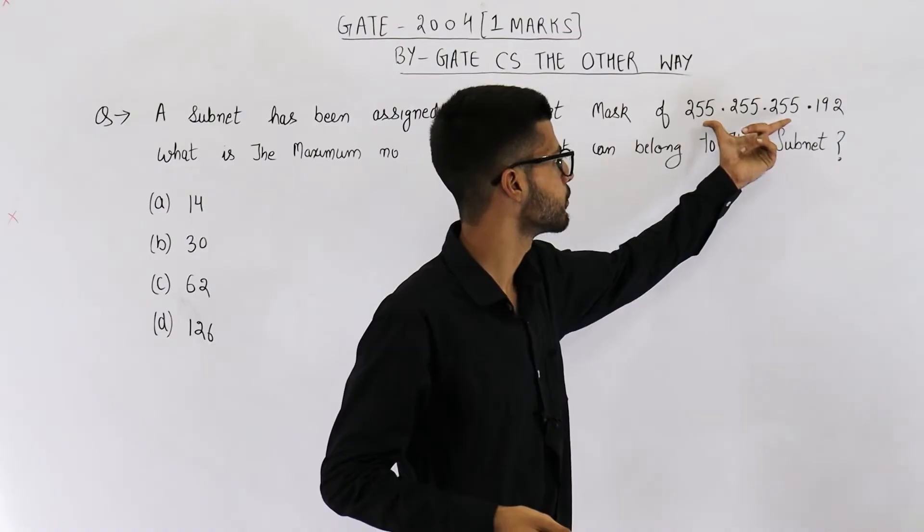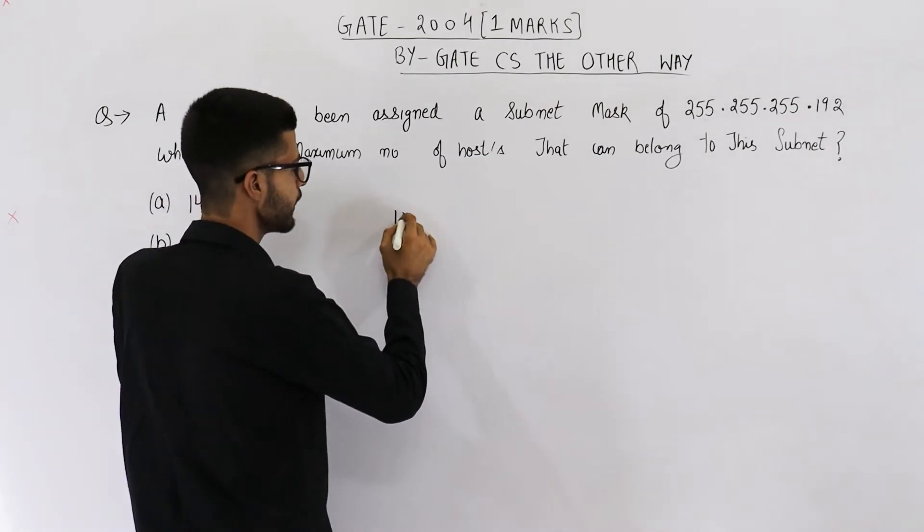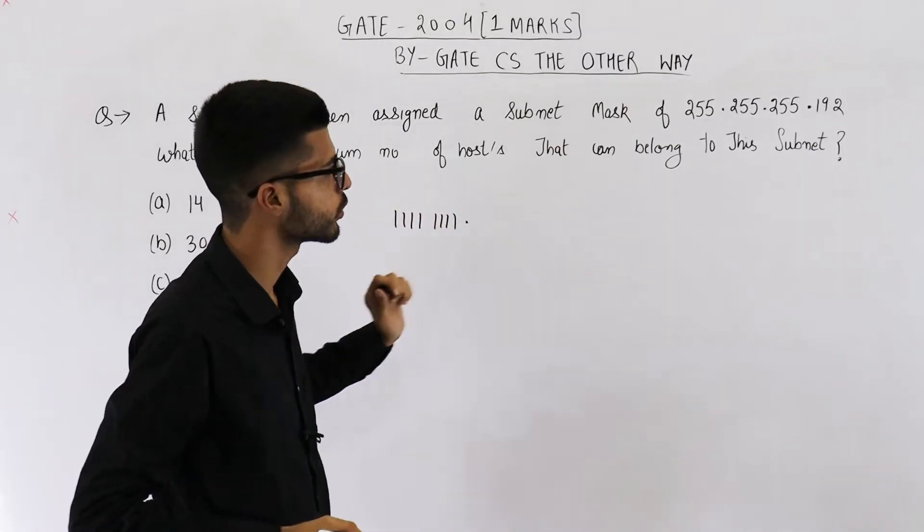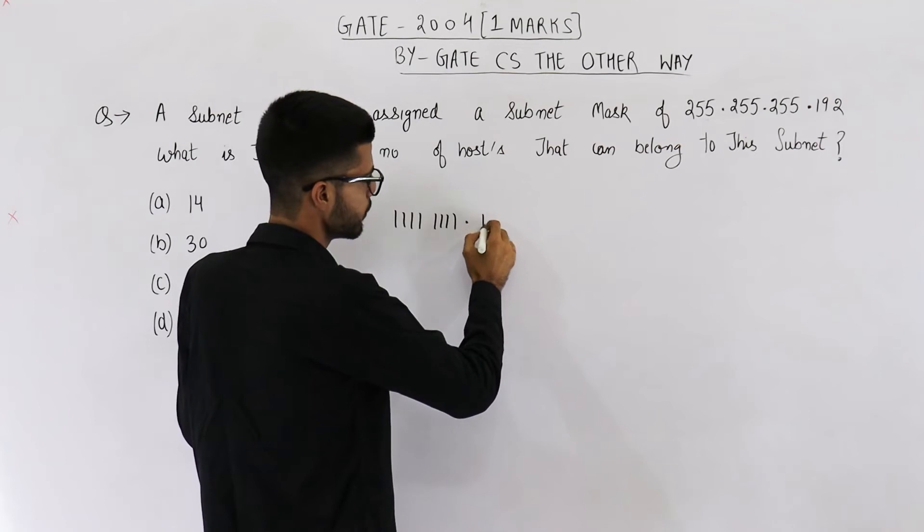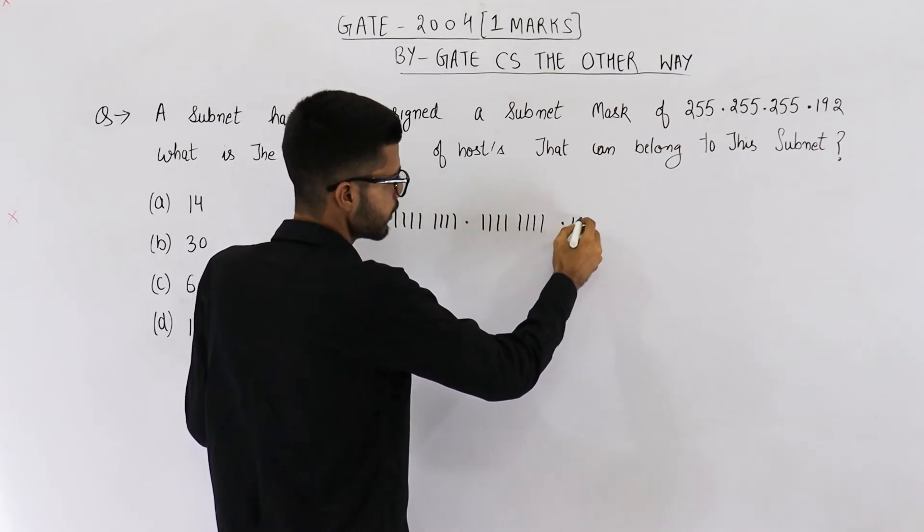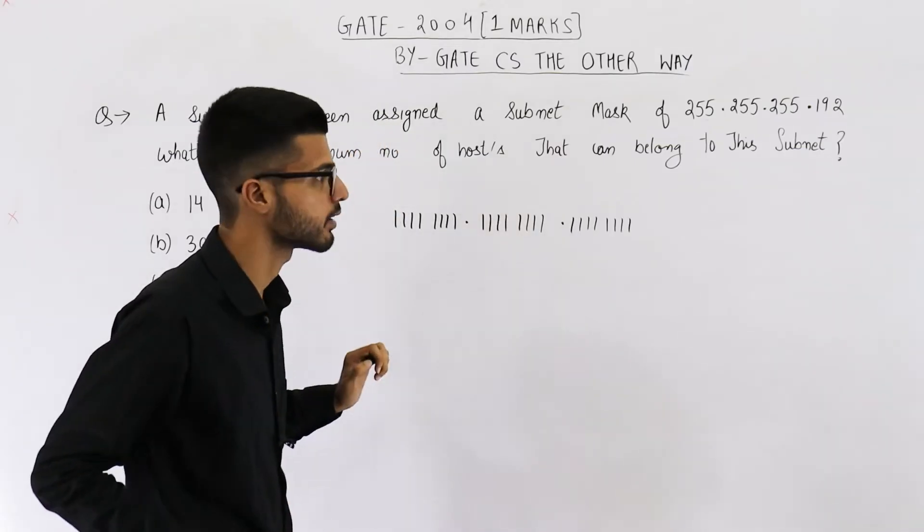First of all, let us convert this subnet mask into binary form. 255 means all 8 bits are 1s. Again, the second octet is also 255, so all 8 bits will be 1s. Similarly, third octet is also 255, so all the 8 bits are high.